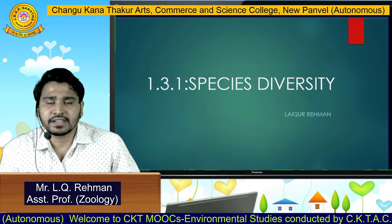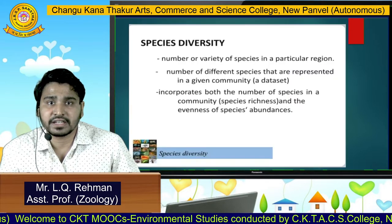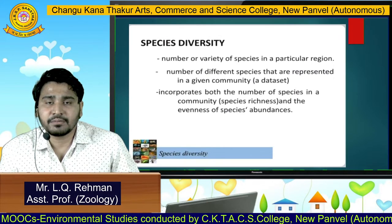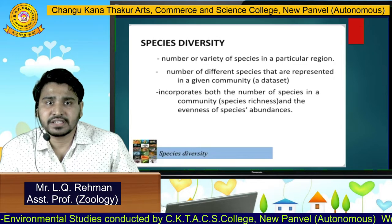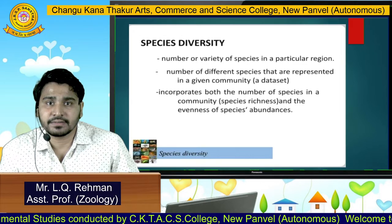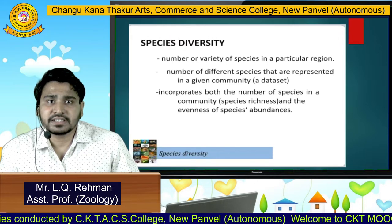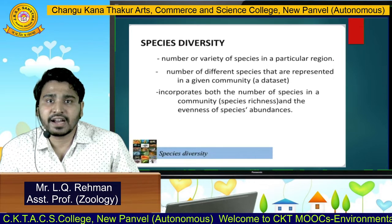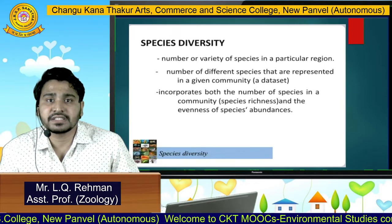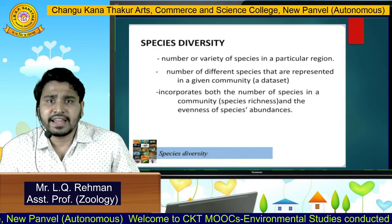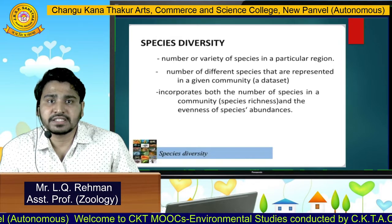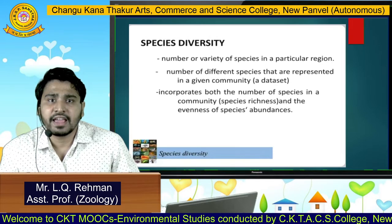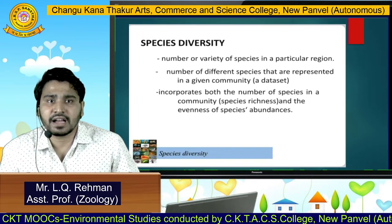So, the first question that arises is: what is species diversity? Basically, species diversity is the number of variety of species in a particular region — the number of different species represented in a given community or dataset. It incorporates both the number of species in a community, which is called species richness, and the evenness of the species, that is the abundance.